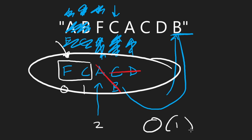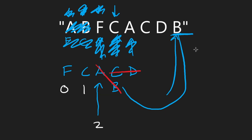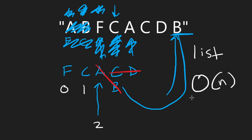So this could theoretically be a constant space solution if we're allowed to overwrite the input. But in most languages strings are immutable, and if you convert the string to a list or array of characters, you're using linear space anyway, so it doesn't really improve anything. That's the general idea behind this most optimal solution, but you can't really implement it in most languages. Check out neatcode.io for a lot more — thanks for watching and I'll see you soon.